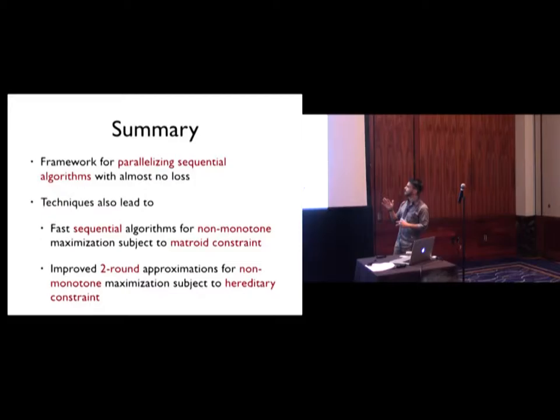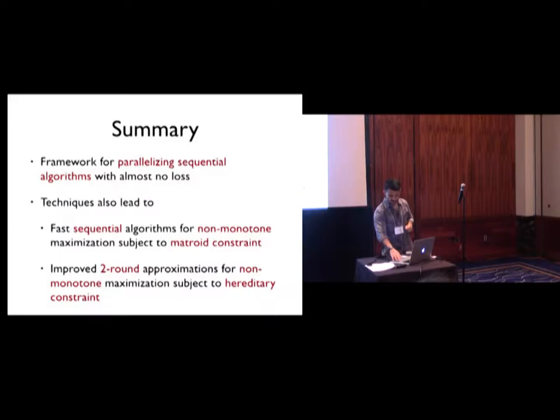Let me summarize. We have proposed a framework for parallelizing sequential algorithms for submodular functions with almost no loss. And the techniques lead to fast sequential algorithms for non-monotone maximization subject to matroid constraints and an improved two-round approximations for non-monotone maximization subject to hereditary constraints. Thanks.